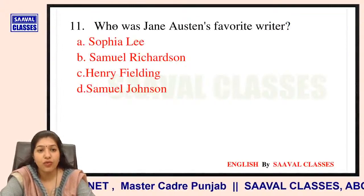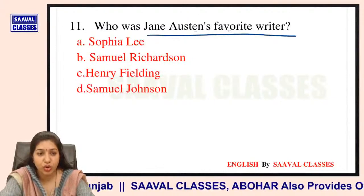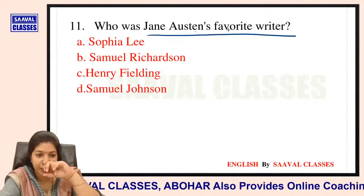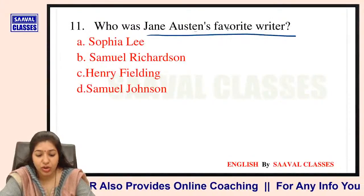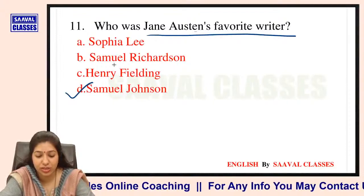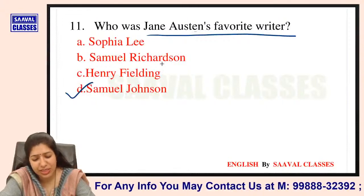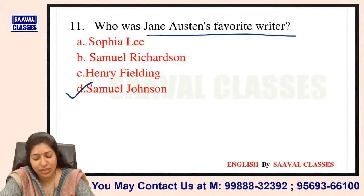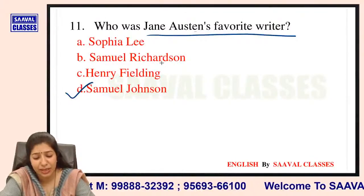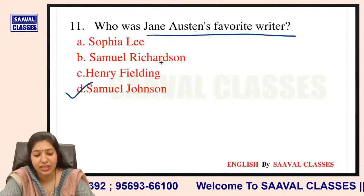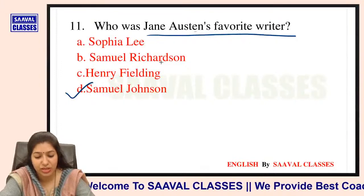Question number 11: Who was Jane Austen's favorite writer? Options are Sophie Lee, Samuel Richardson, Henry Fielding, ya Samuel Johnson? Jane Austen's favorite writer was Samuel Johnson. Samuel Richardson aur Henry Fielding ko toh woh itna pasand hi nahin karti thi — unke works mein kamiyan nikaalti thi. Samuel Johnson ko like karti thi woh.